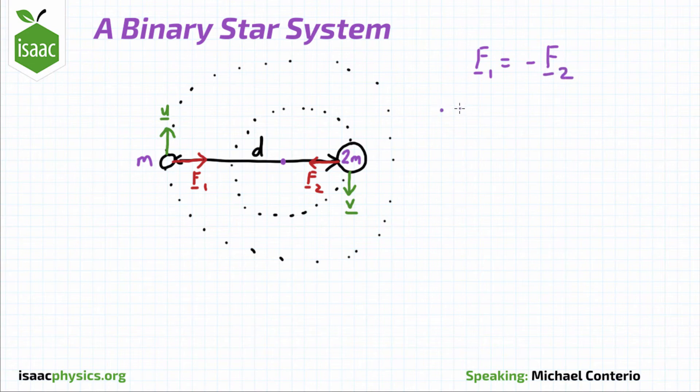While they're in these orbits, the stars must always remain on the opposite side of the centre of mass to each other, so the gravitational force is always pulling them towards the centre of mass to act as a centripetal force.